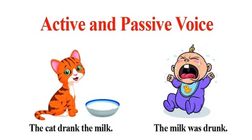Basically, there are two types of voice: active and passive voice. If I say 'the cat drank the milk,' this sentence is in active voice. And if I say 'the milk was drunk,' this sentence is in passive voice. What is the difference? How will we identify whether a sentence is in active voice or passive voice?